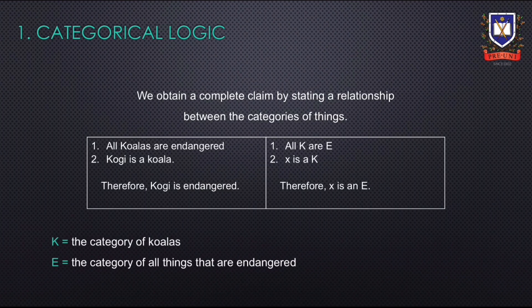For example, if we have a set of claims — all koalas are endangered, and Kogi is a koala — we can therefore conclude that Kogi is endangered. We can express these as symbols, where K represents the category of koalas and E represents the category of all things that are endangered. Since we know that all K are E and X is a K, we can therefore claim that X is an E.